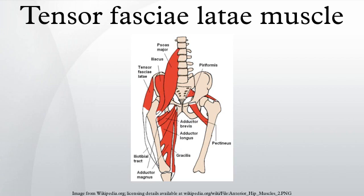The tensor fasciae latae is a hip flexor and abductor muscle, meaning it assists in moving the hip forward and outward. Rotating the hips inward is another action the TFL muscle performs. Because it is used for so many movements and is in a shortened position when seated, the TFL becomes tight easily. TFL stretches lengthen this important muscle.